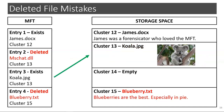At a later time, with no correlation to the previous deletion, a user creates a new file called koala.jpg. The file metadata occupies MFT record number 3, and the file itself exists starting at cluster 13, completely overriding the old file of mschat.dll that used to live there.